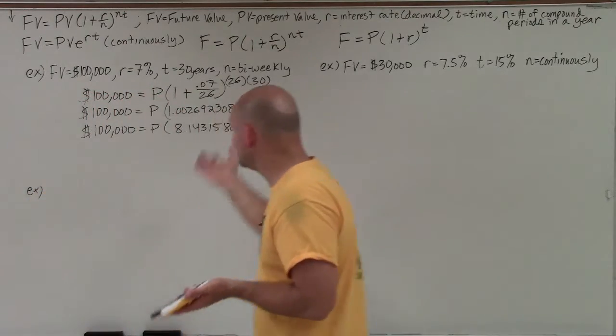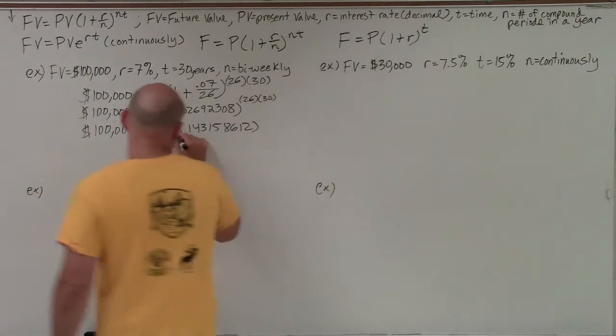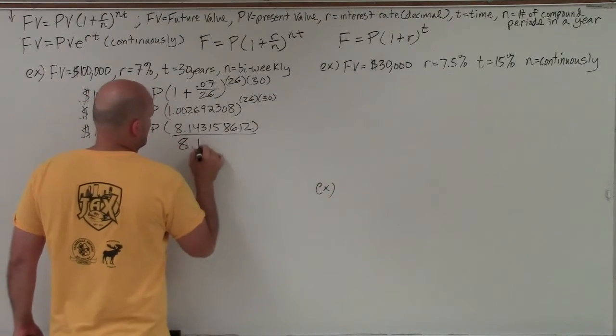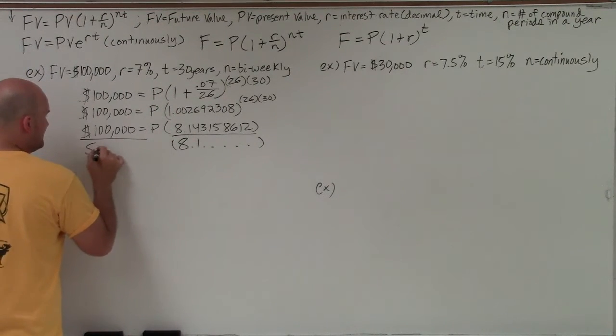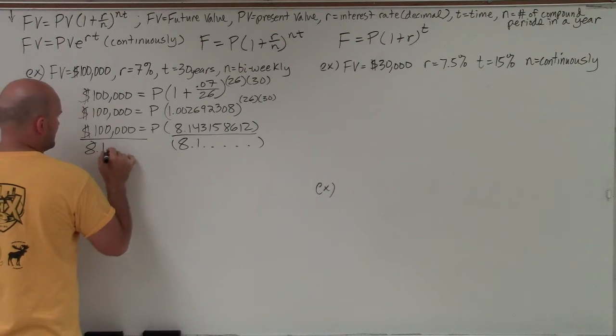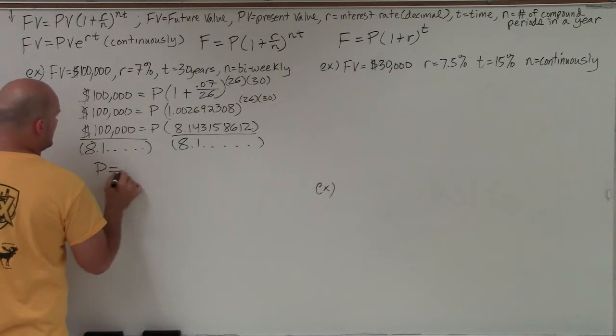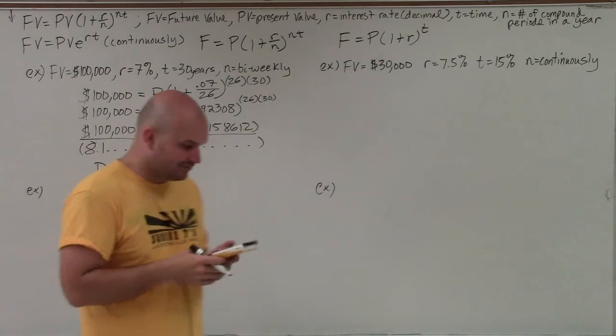So now, basically to solve for P, I just got to divide on both sides. To save a little time, I'm not going to write the whole number out. So my present value is going to equal.